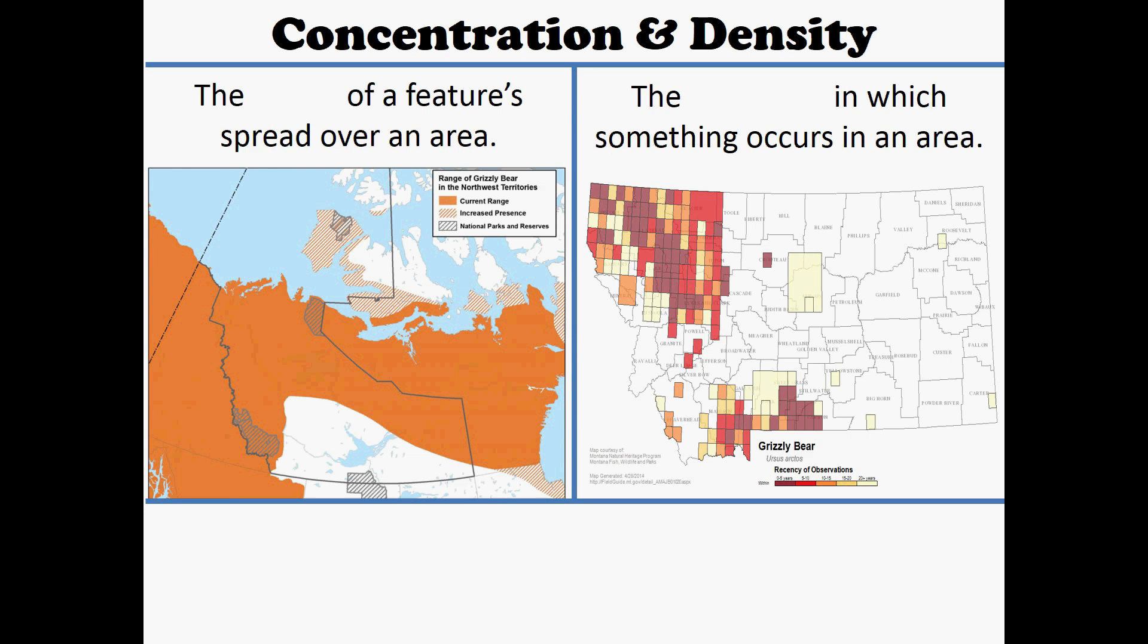Moving on. We have these two terms, concentration and density. Concentration and density are very closely related. Concentration is just trying to tell you where can something be found. So in the example on the left, we see we're looking at a range of grizzly bears. Because who doesn't like a map about grizzly bears? I love them. We can see that anywhere that it's this burnt orange, we see that grizzly bears will range. The problem with concentration is it doesn't actually tell you where there are more grizzly bears or where there are less. You just know that a grizzly bear has been sighted there. Could be one. Could be a million. Hopefully it's none.